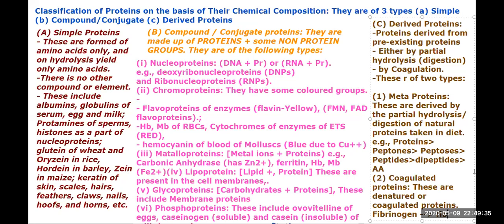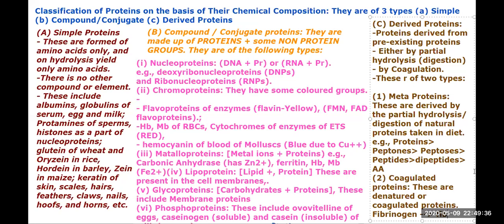This is the classification of proteins on the basis of chemical composition — we can classify them into simple, compound, and derived proteins. Now we move to another type of classification.